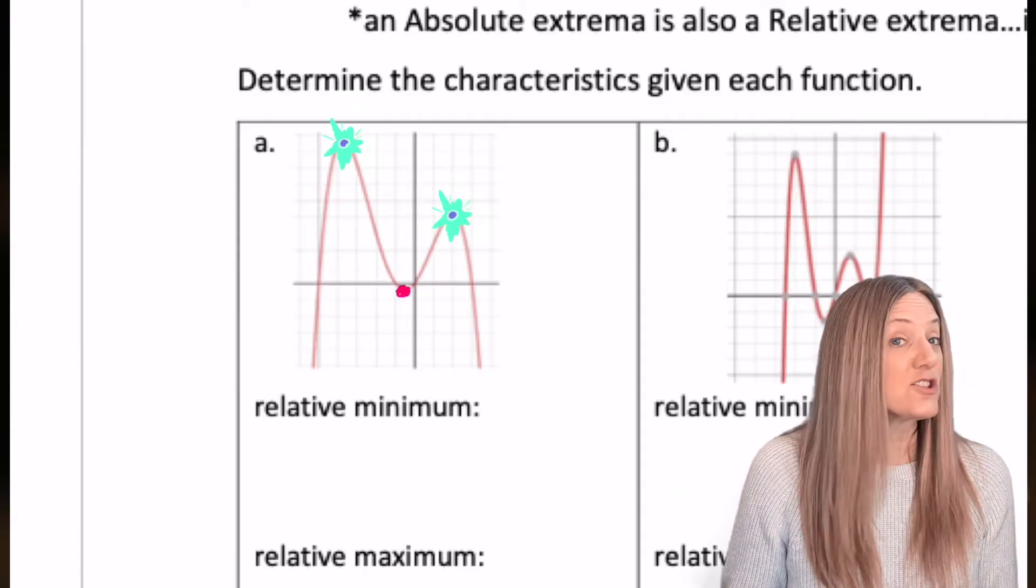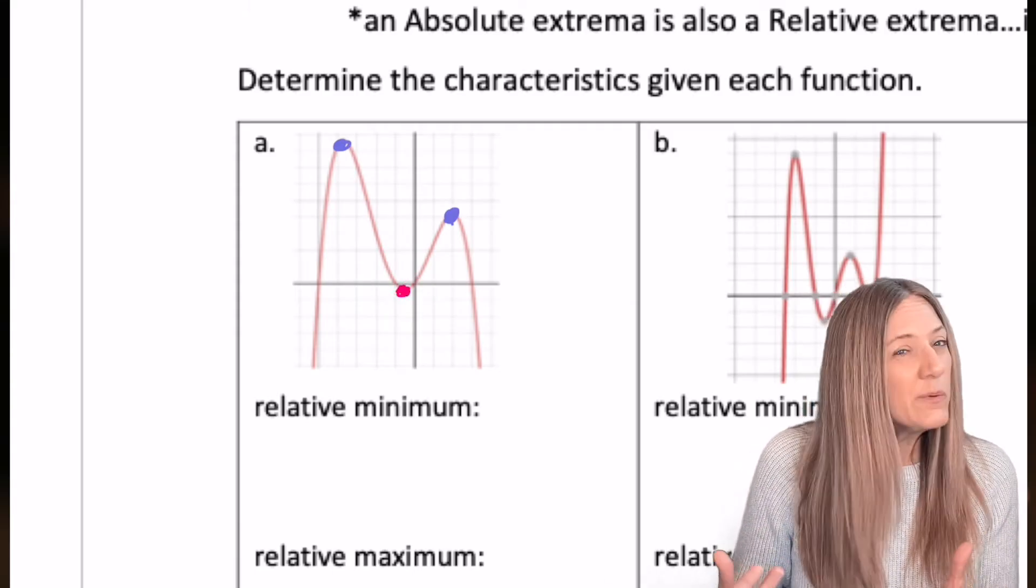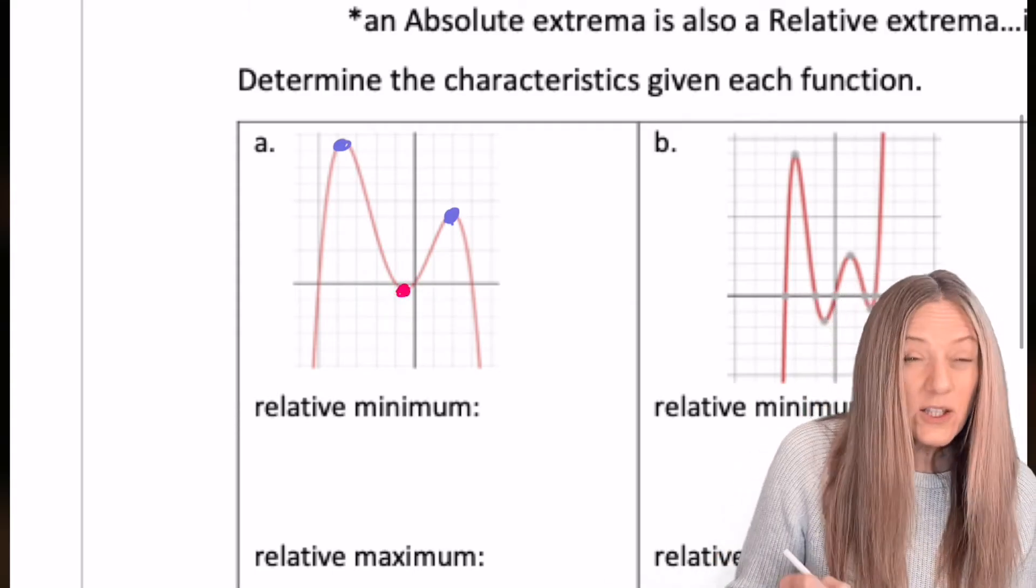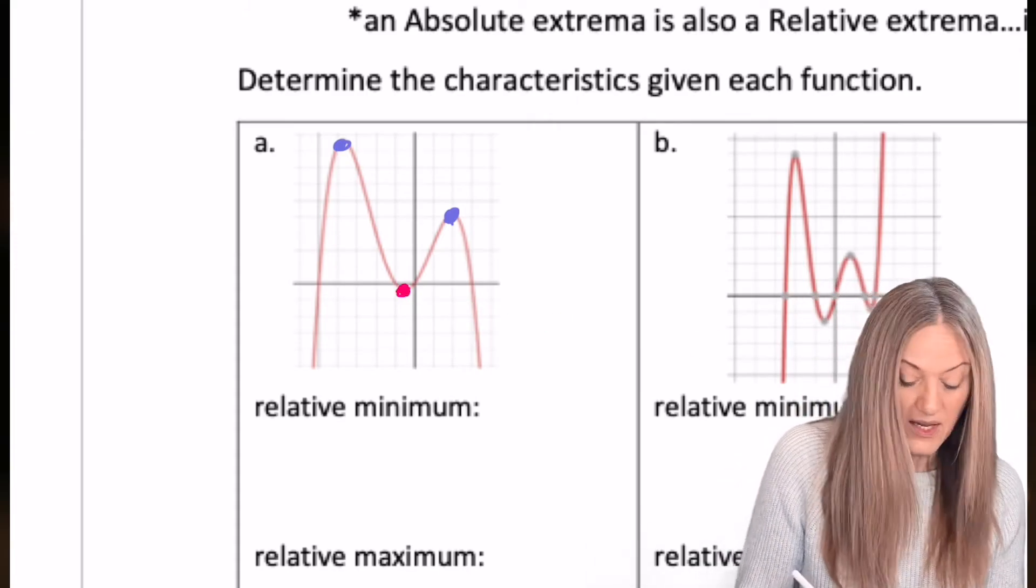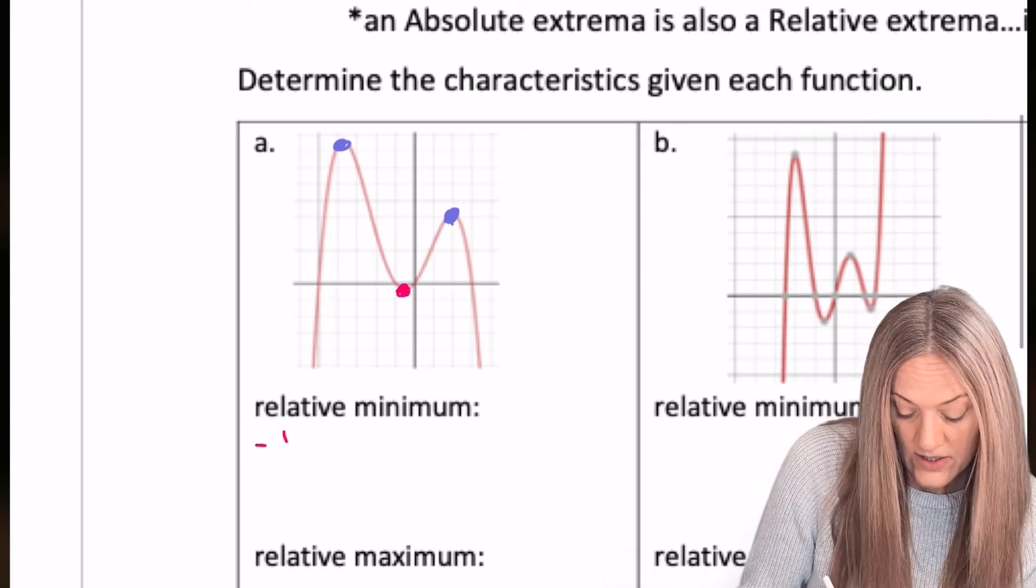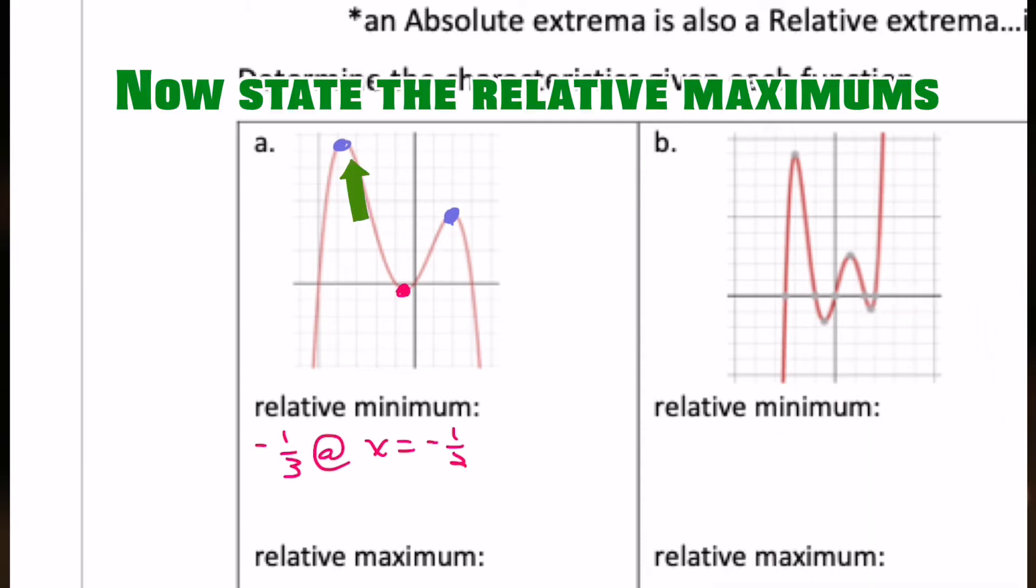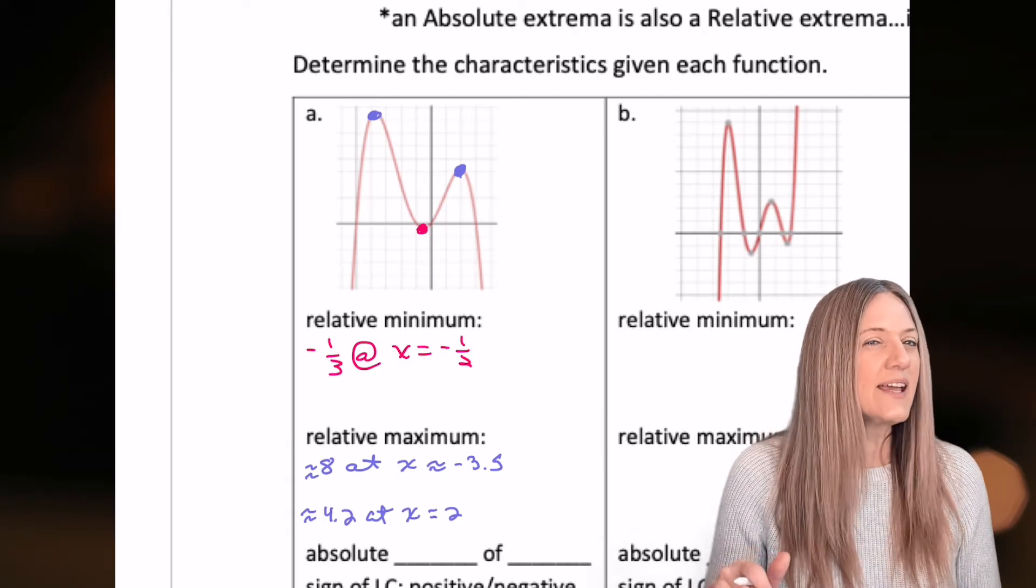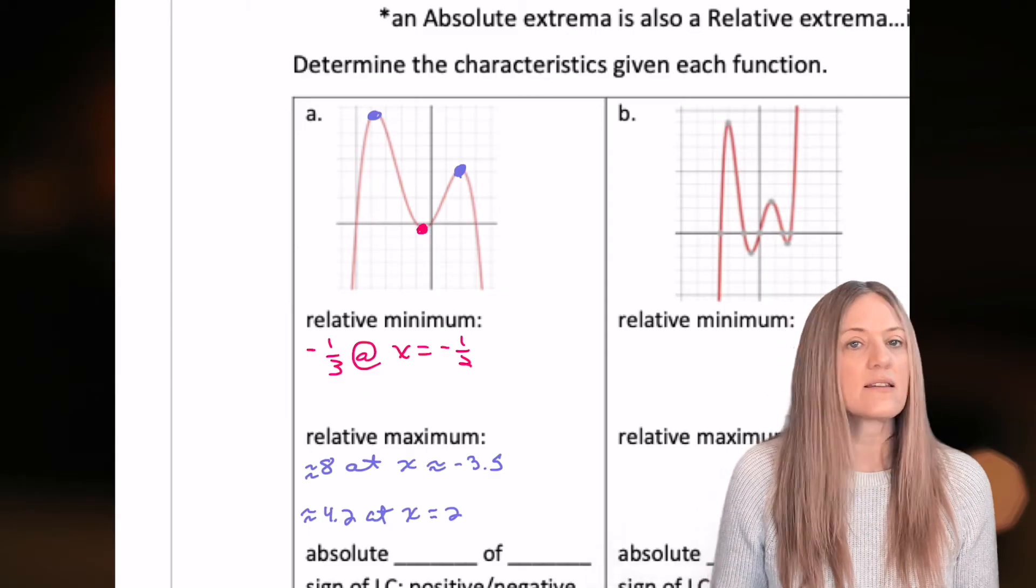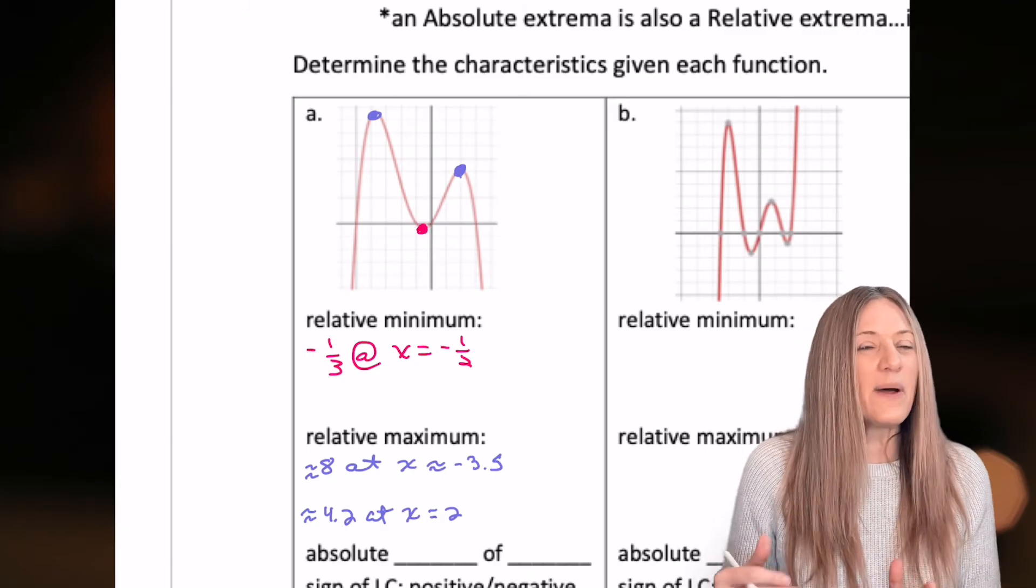The function graphed in A has two relative maxes and one relative min. Let's remember how we say that, just like we did with quadratics. As I look at that relative min, it doesn't go through an exact point, so I'm just going to estimate. I'm going to say we have a relative min of negative one-third at about x equals negative one-half. We have a relative max of about 8 at approximately negative 3.5 for the x. Then we have a relative max of about 4.2 at about x equals 2.